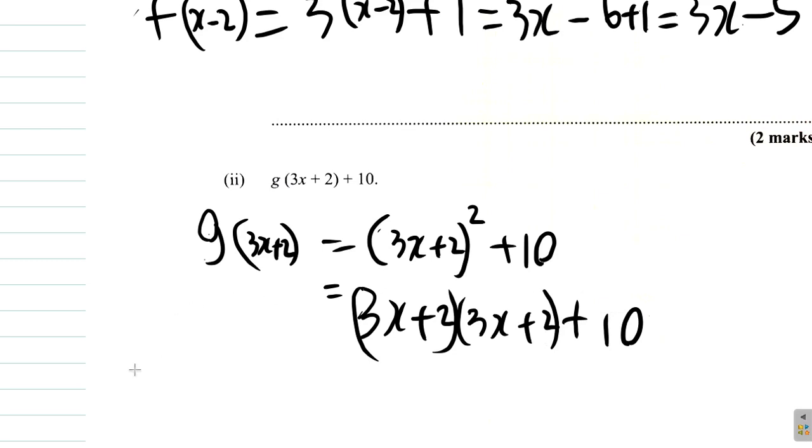Now, remember, 3x plus 2 squared is not the same as 3x squared plus 2 squared. That would be wrong. Can't do that. 3x plus 2 squared means you have two 3x plus 2's and then multiply one another.